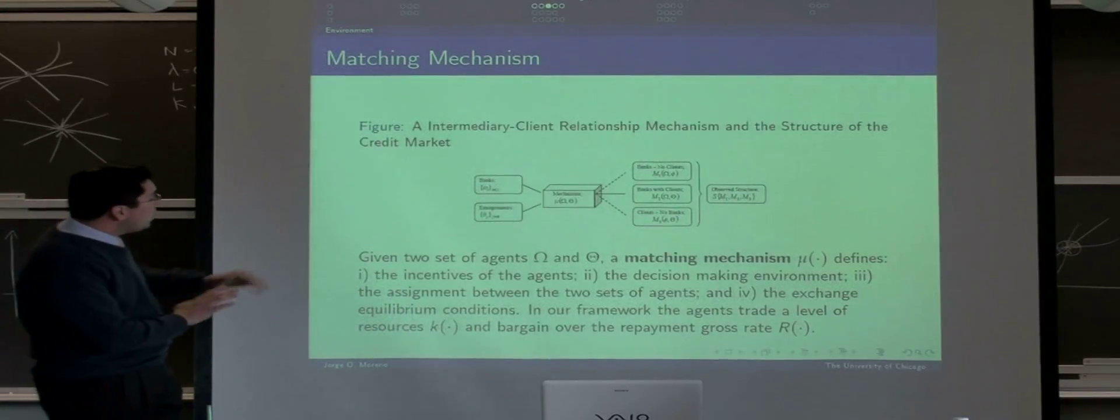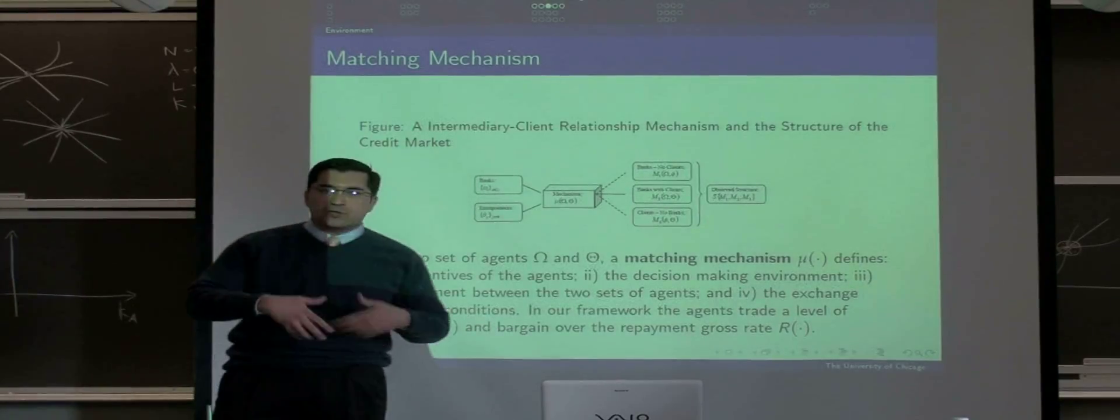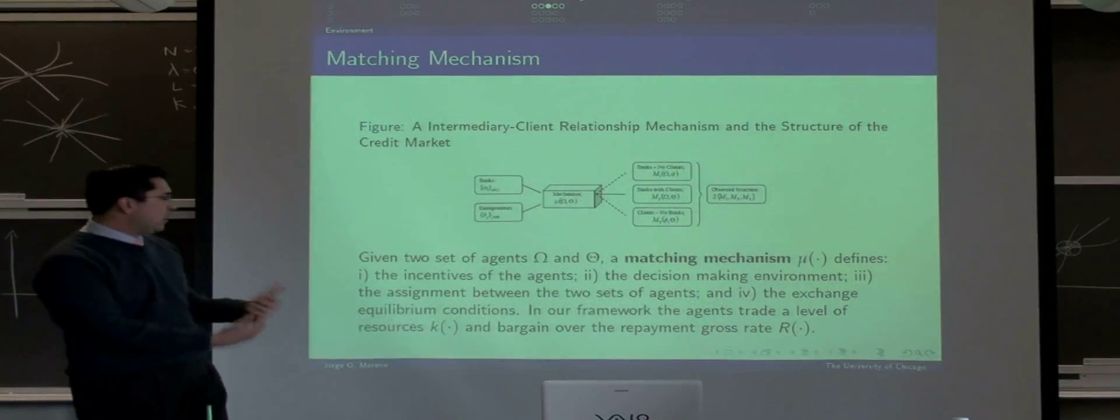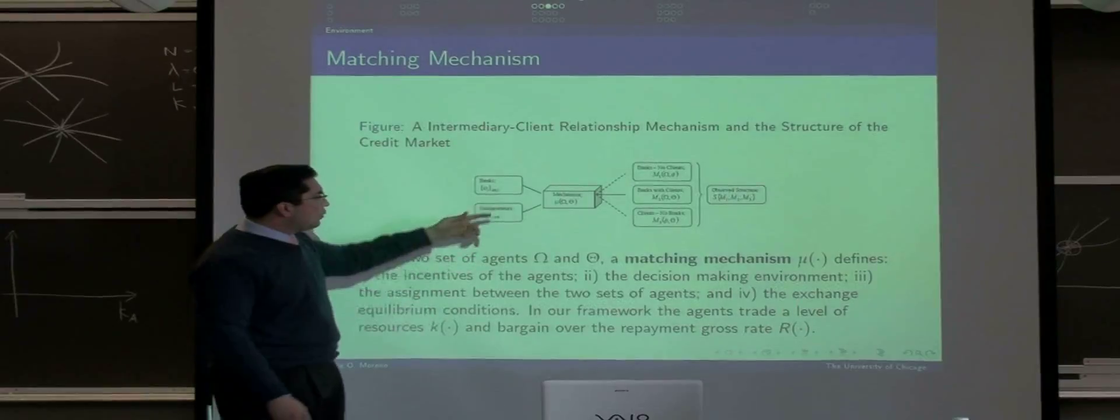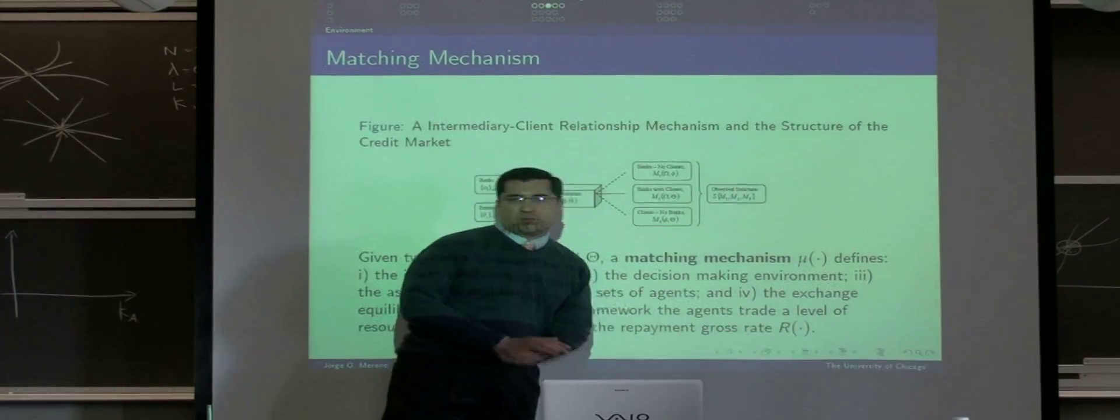In our framework, we are going to have supply and demand for something we call credit, but usually it's just resources. And what we are going to trade is a certain level of resources or capital, and we are going to allow them to bargain over the interest rate they are paying.